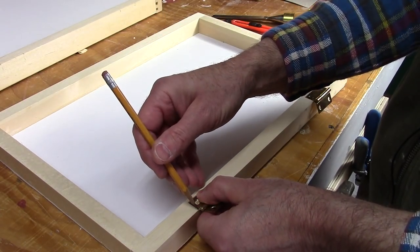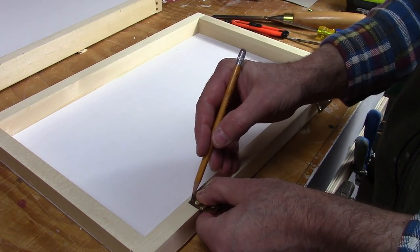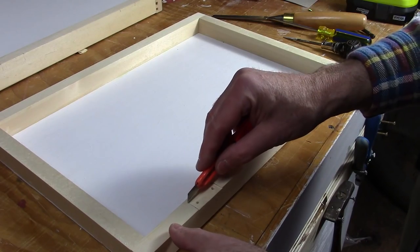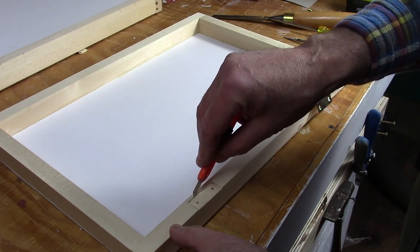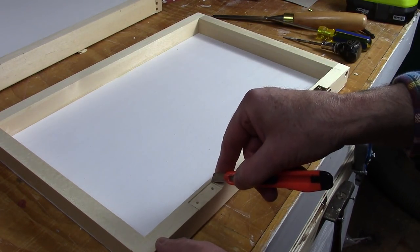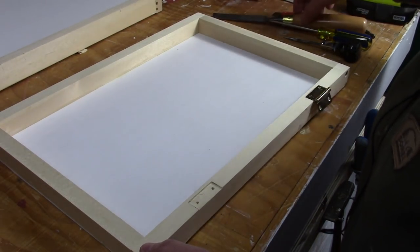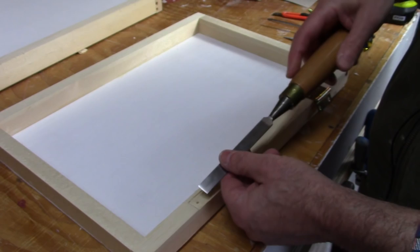Now I'm marking where the hinges will go. I trace my pencil line with a razor knife, and then I cut out the waste with a chisel. You can just flush mount the hinges if you want to, and the paint box will work just fine. It just looks a little better if you mortise in the hinges.